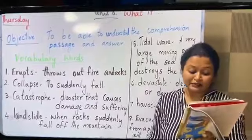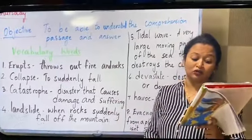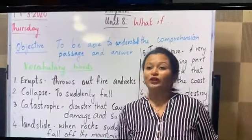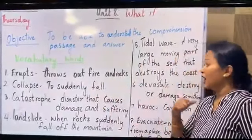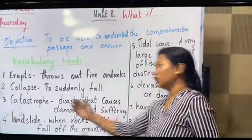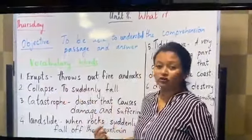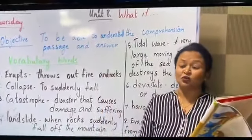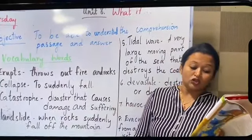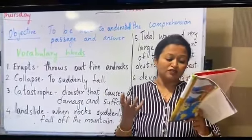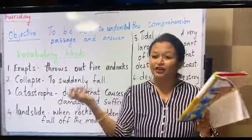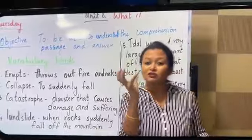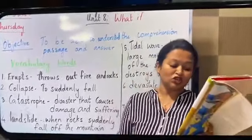Scientists fear that when it erupts, an enormous chunk of the volcano could collapse and fall into the sea. Collapse means something which suddenly falls. And chunk — just write down the meanings as well. Chunk means a part of something that is separated. For example, you take a stone and it breaks, so there are chunks of big rocks. That's called chunk.